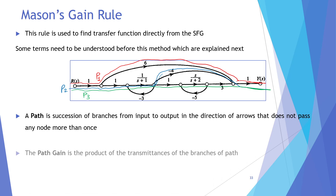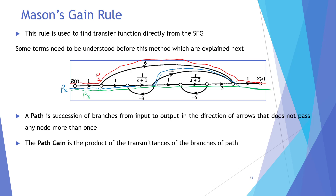Next, after identifying all the paths, the next topic/component is Path Gain. Jo bhi path aapne specify kiya, us path ka ek gain hota hai. Path gain kya hai? Is path ke andar aane wali jitni branches hain, un branches ke gains ko aap aapas mein multiply karte hain — that is called path gain. For example, P1 path mein ek branch ka gain 1 hai, next branch ka gain 6 hai, aur agle branch ka gain 1 hai. In teeno ko multiply karne par P1 ka path gain = 6.